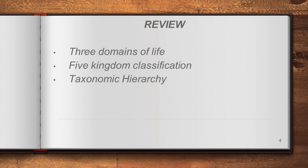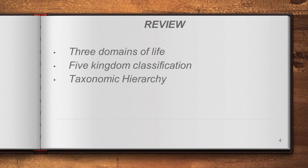The second topic was the five kingdom classification system. As per this system, the entire organisms are classified into five kingdoms: Monera, Protista, Fungi, Plantae, and Animalia. The third topic was taxonomy hierarchy — a classification order given for each species, such as Kingdom, Phylum, Class, Order, Family, Genus, and Species.